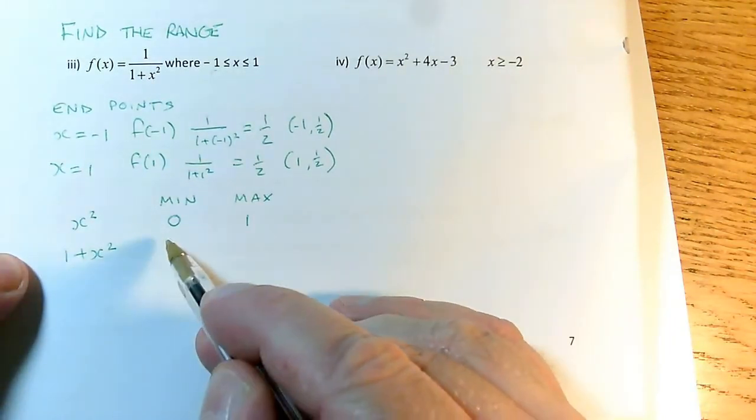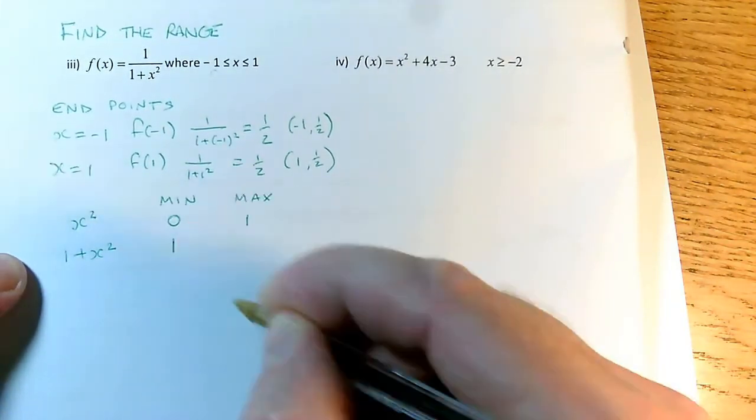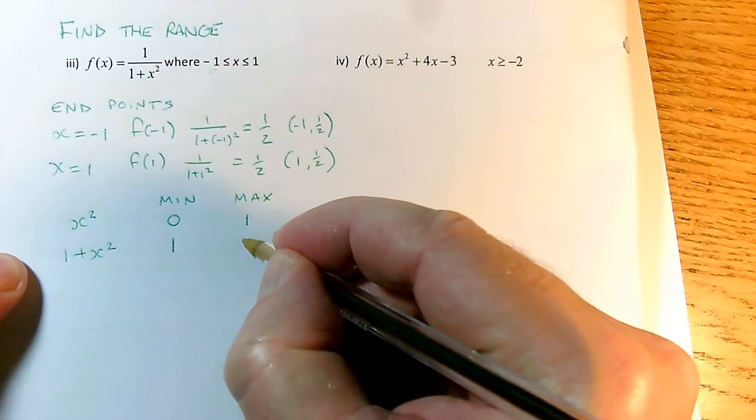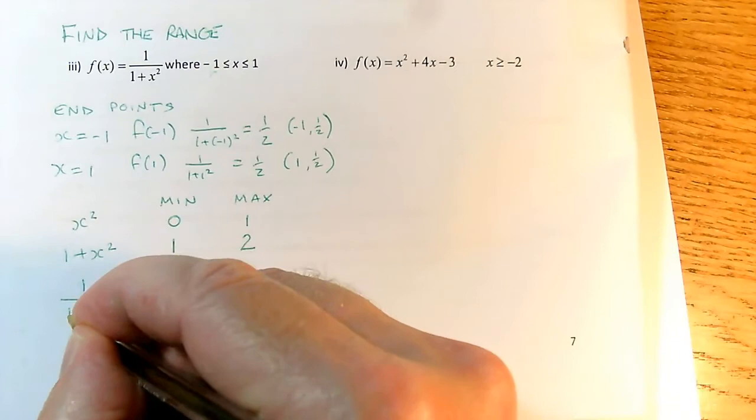So what does that tell me about 1 plus x squared? Well, the minimum value is going to now be 0 for the x squared plus this 1, so I'm going to have 1 plus x squared is going to go from 1, and the maximum value when I add the 1 is going to be 2.